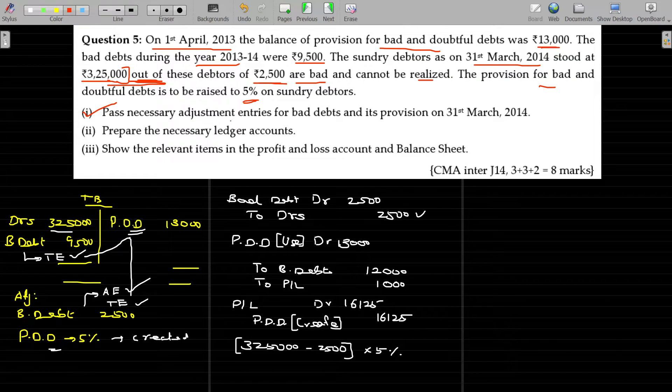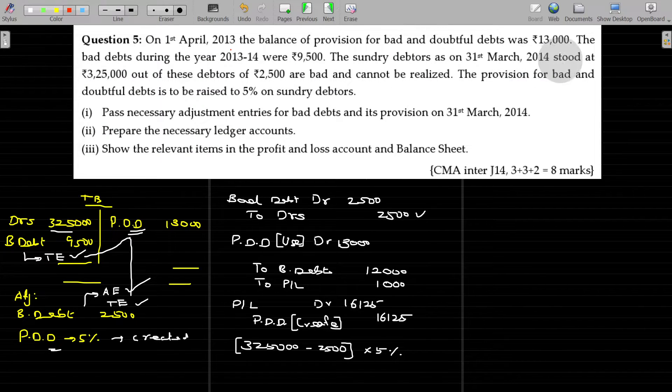Pass necessary journal entries for bad debt and its provisions. We have done that. Prepare the necessary ledger account. So we can prepare the ledger account for debtors, PDD, bad debt, for these three. For these three.